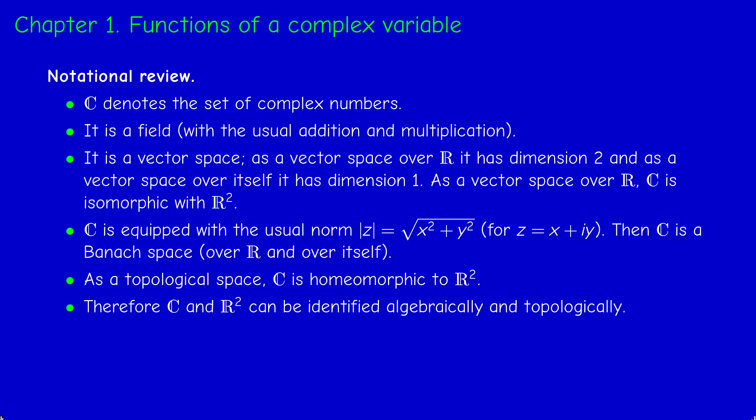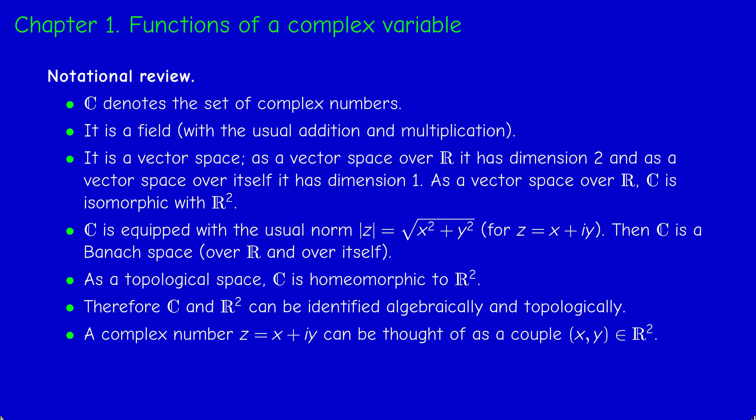There is a caveat: when we say R², there is no multiplication in R². So C and R² are the same as vector spaces but not as fields, because R² is not a field. The rigorous definition of a complex number is that it is a couple.